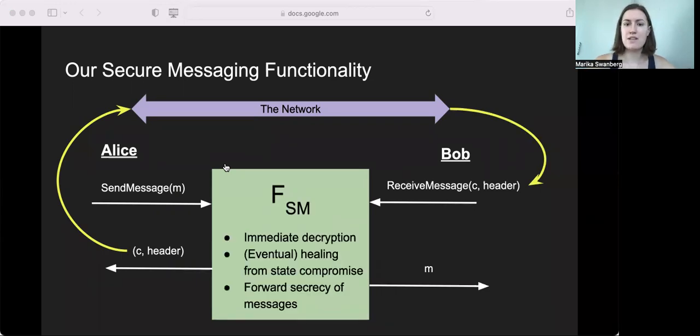So FSM has several desirable properties. First, Alice and Bob are guaranteed immediate encryption and decryption, even for out-of-order messages. And even against a fully adaptive adversary, the parties will eventually heal from a state compromise, and their messages are protected by forward secrecy. Note that determining the exact moment where security is regained post-compromise is one of the analytical challenges of this work.